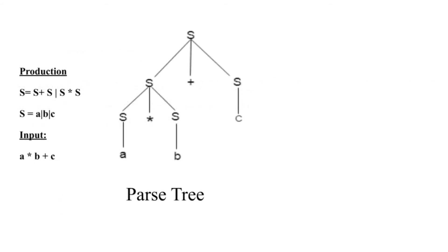In this example, we have a production rule and input. We have to compute the same input as: a star b plus c.